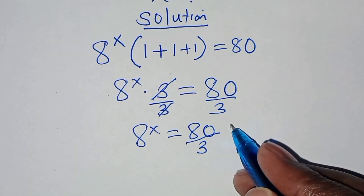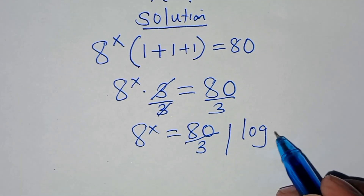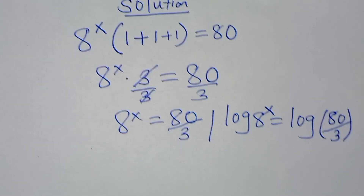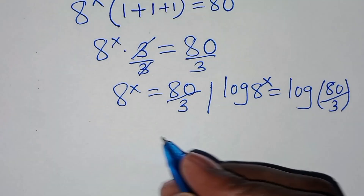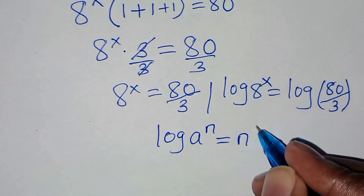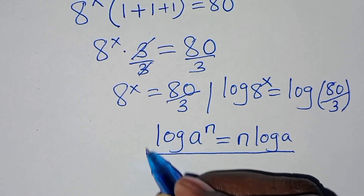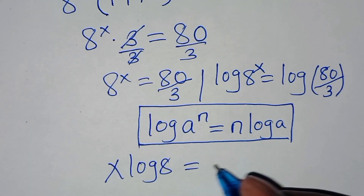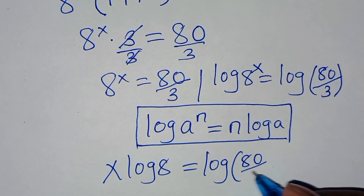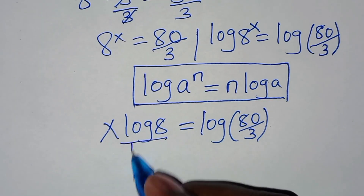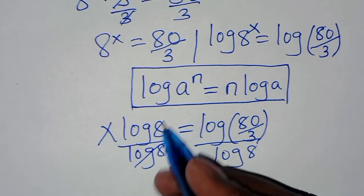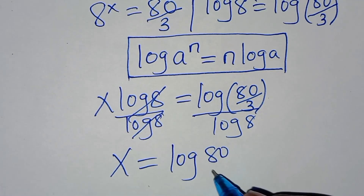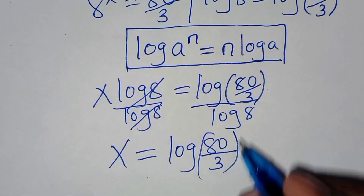To solve for the value of x, we introduce logarithm on both sides. Applying the power rule property of logarithm, then 8 to the power x becomes x times log 8. This is equal to log of 80 divided by 3. So let's divide both sides by log 8, so that x is equal to log(80/3) divided by log 8.